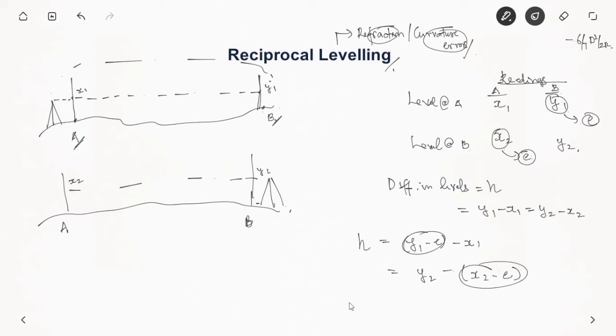So adding both we have 2h equal to y1 minus E minus x1 plus y2 minus x2 minus E. So this minus of minus becomes plus sign, so E gets cancelled.